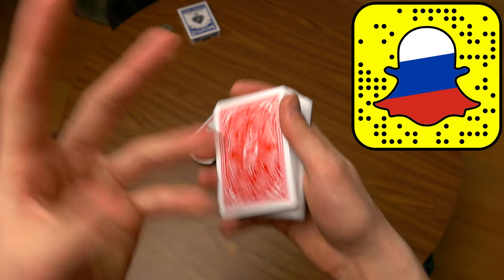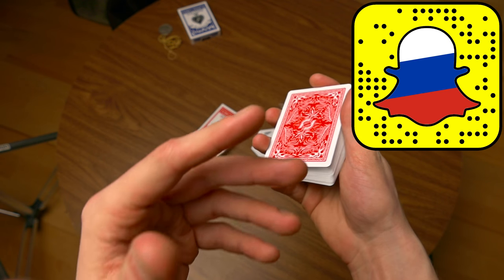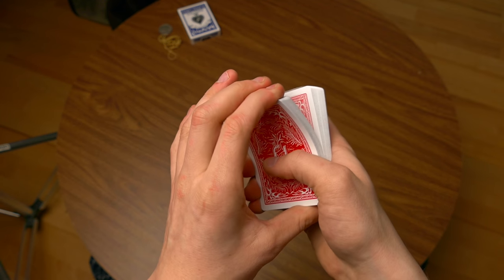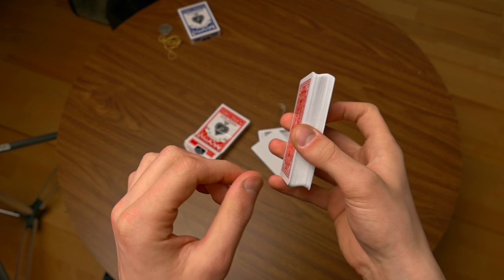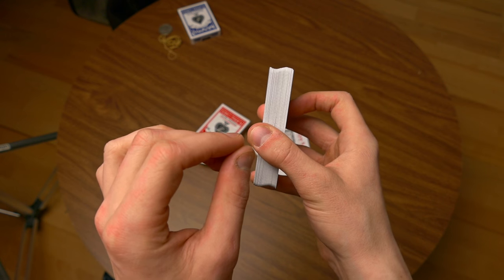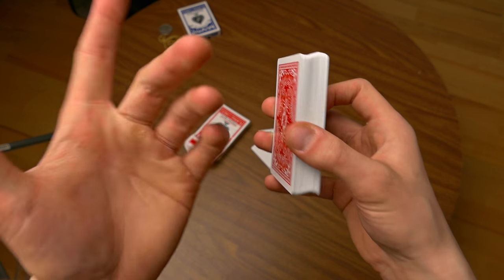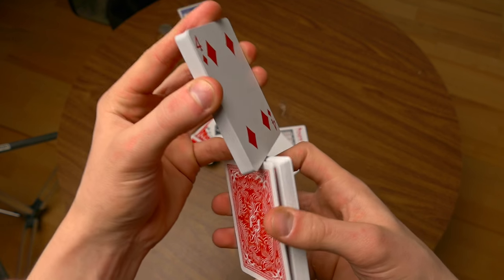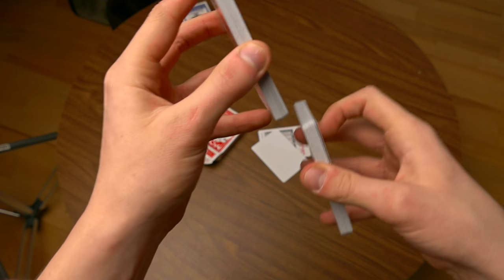If you know how to do the faro shuffle without ruining the corners, then I would recommend using the faro shuffle to break up the cards. So basically a faro shuffle looks like this.